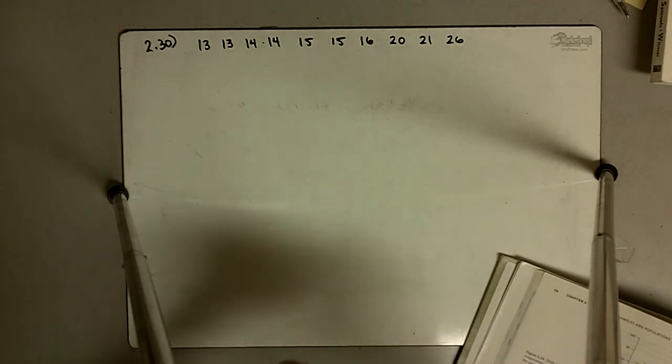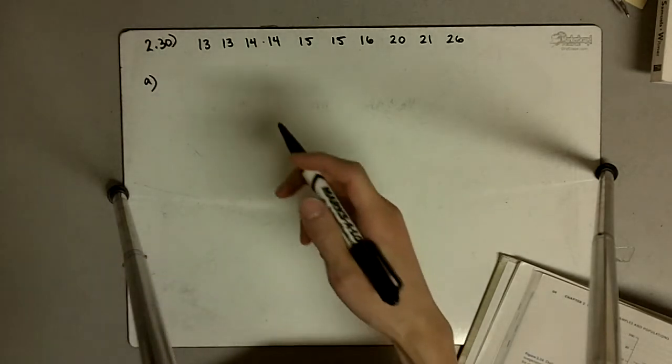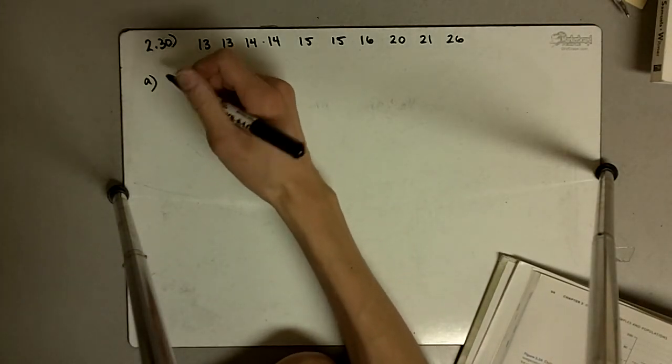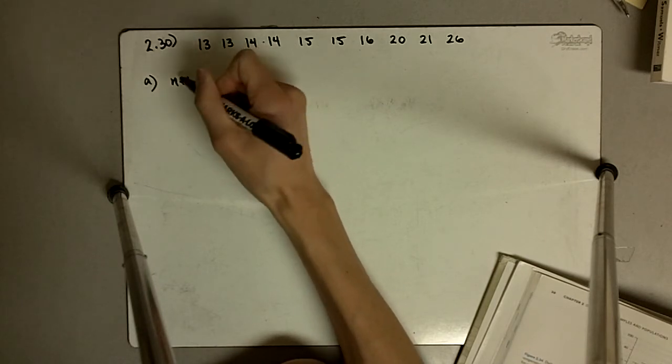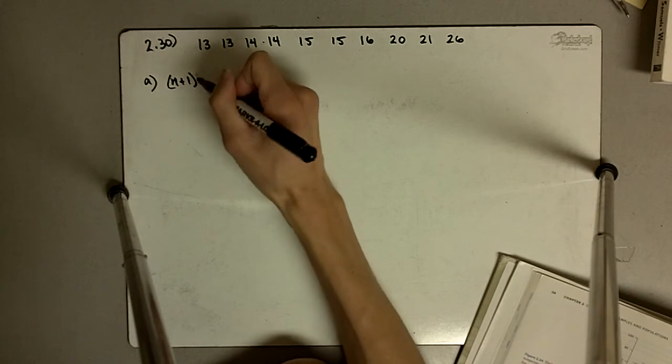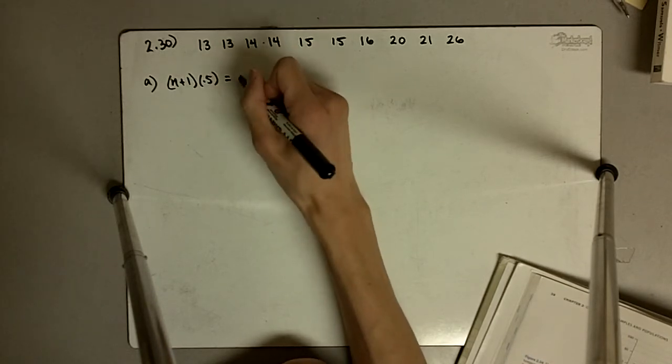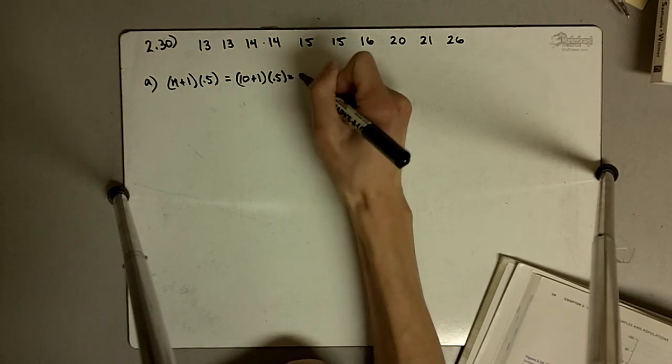Part A asks determine the median and the quartiles. We found the median at the end of 223 and again the way we found that was we did n plus 1 divided by 2 or times 0.5 and that equaled 10 plus 1 or 11 times 0.5, 5 and a half.